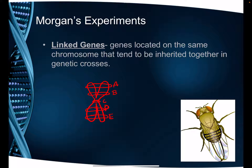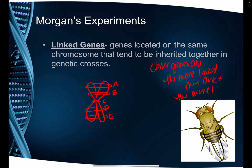Linked genes are genes that are located on the same chromosome. Any genes that are located on the same chromosome that tend to be inherited together are called linked genes. Now the closer genes are, the more linked they are, and the more likely they are to be inherited together.